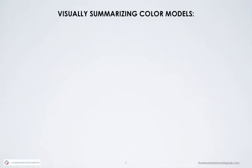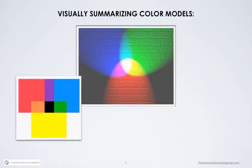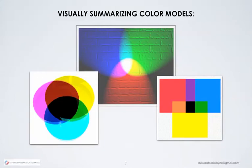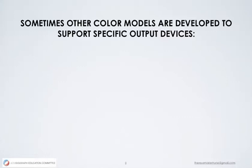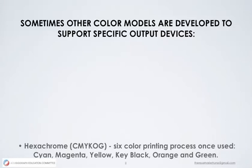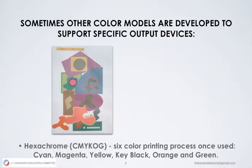Let's visually summarize the three color models we've covered: RGB adds with lights; CMYK subtracts for printing; RYB subtracts to mix paints. Sometimes other color models are developed to support specific output devices. At one time there was hexachrome, a six-color printing process, that combined cyan, magenta, yellow, key black, orange, and green. This is because the creation of orange and green was muddy with just cyan, magenta, and yellow.